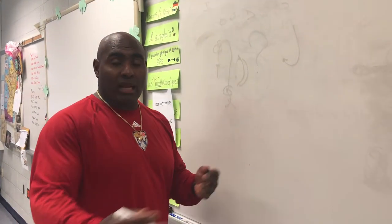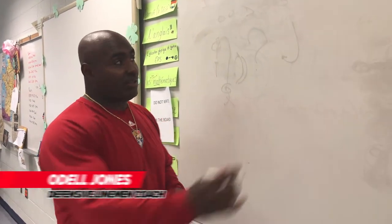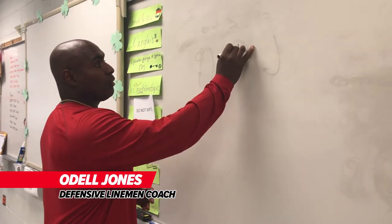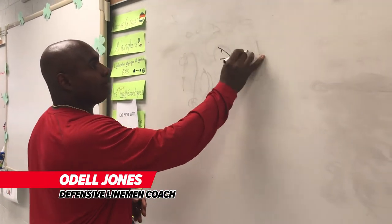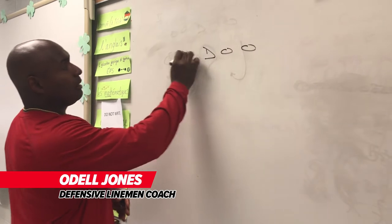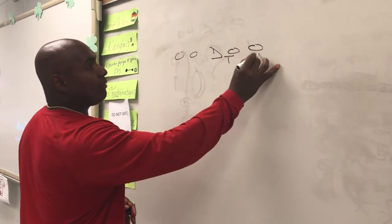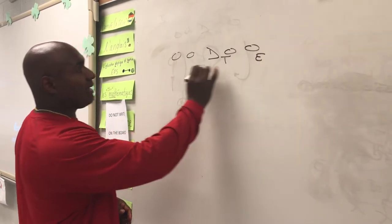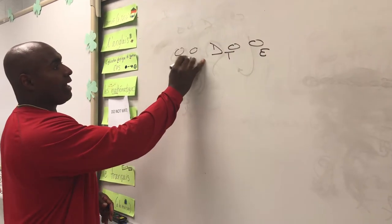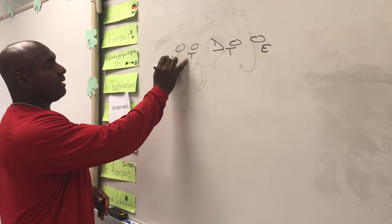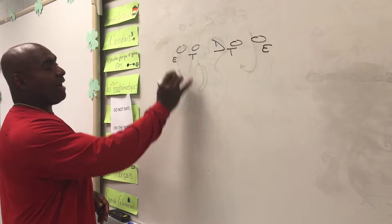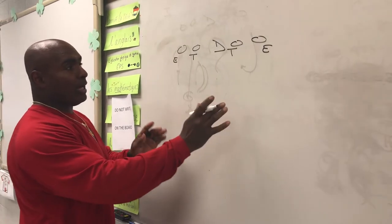We call this the game, with our tackle and our defensive end. So we draw it up. Here, we got our two-eye, we got our five technique, we got our three technique, we got our five technique, and we're going to work a game.